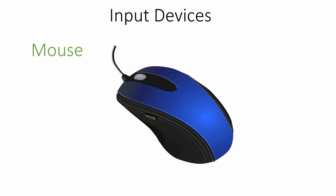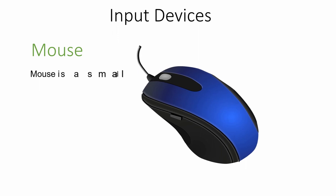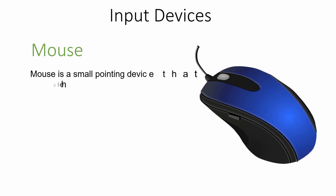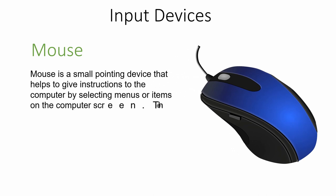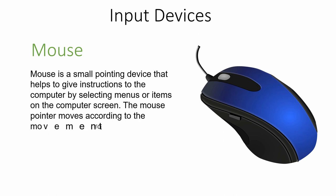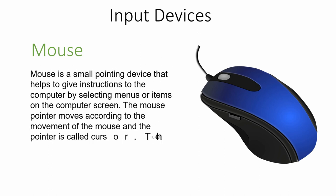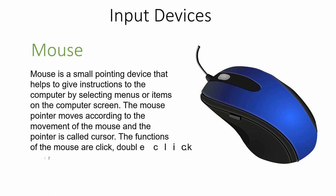Mouse is another important input device in our computer system. It is a small pointing device that helps to give instructions to the computer by selecting menus or items on the computer screen. The mouse pointer moves according to the movement of the mouse, and this pointer is called the cursor.